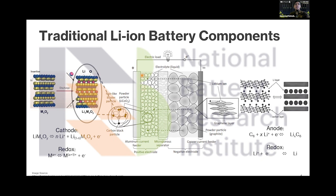The conductive material is used to increase the electronic connectivity between the cathode particles, so that every cathode particle is accessible to electrons, because the binder is not a good conductor — it's an insulator.